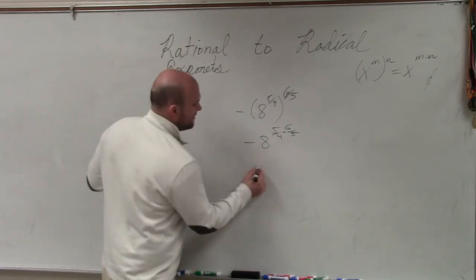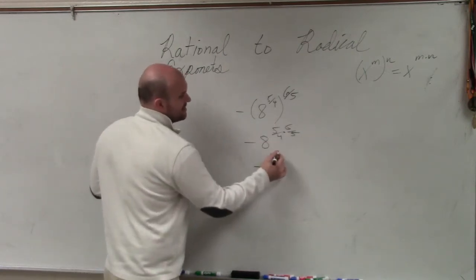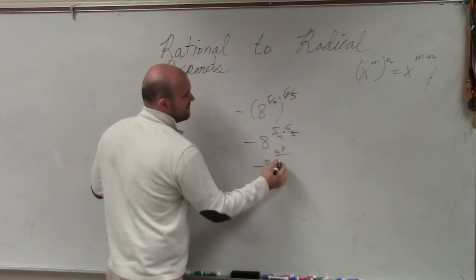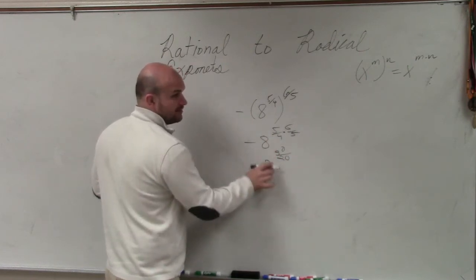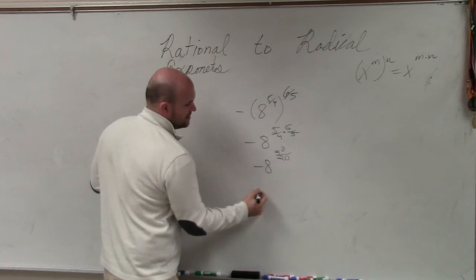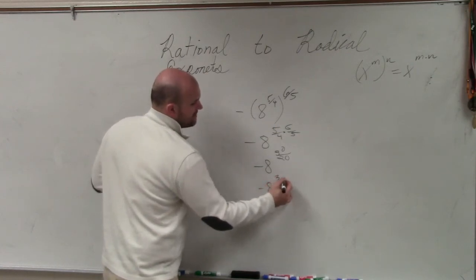So therefore, negative 8, 5 times 6 is 30, 4 times 5 is 20. I can reduce that fraction to negative 8 to the 3 halves power.